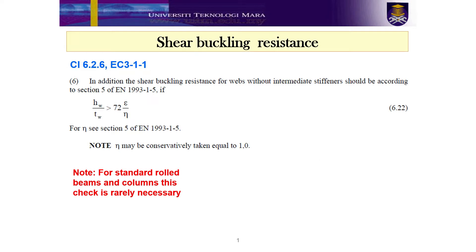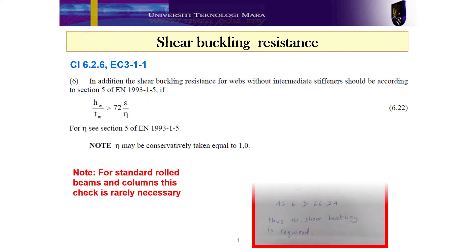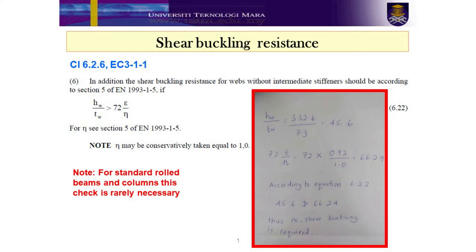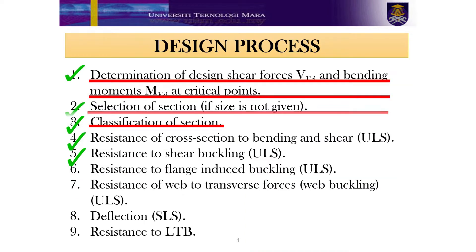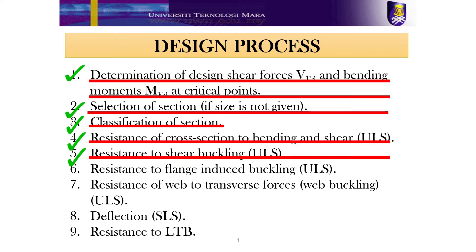Clause 6.2.6 refers to the shear buckling resistance design. Referring to the red box, as the ratio of HW over TW is lesser than 72 times the ratio of strain over the conversion factor, therefore no shear buckling check is required. Note that for standard rolled beams and columns, this check is rarely necessary. Thus, we have completed step number 5.